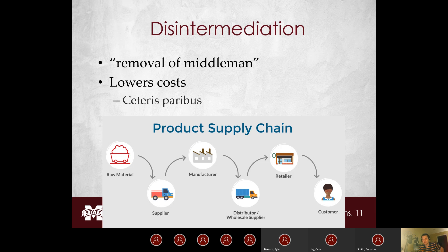One of the most important concepts in this chapter is disintermediation. It's probably the most important concept from chapter seven. Disintermediation is basically reducing the length of your supply chain. A common supply chain goes: raw materials → supplier → manufacturer → wholesaler → retailer → consumer. What disintermediation does is remove some aspect of that traditional supply chain — in most cases, removing the wholesaler or distributor, going directly from manufacturer to consumer or manufacturer to retailer.